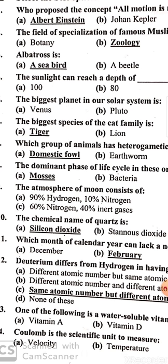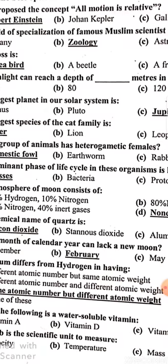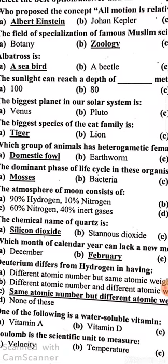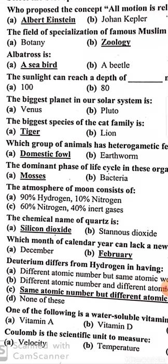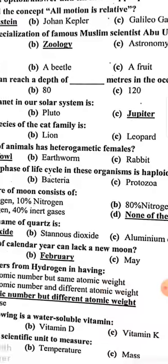February is 28 days and the lunar calendar has 29-30 days in a month. Deuterium differs from hydrogen in having the same atomic number but a different atomic weight.